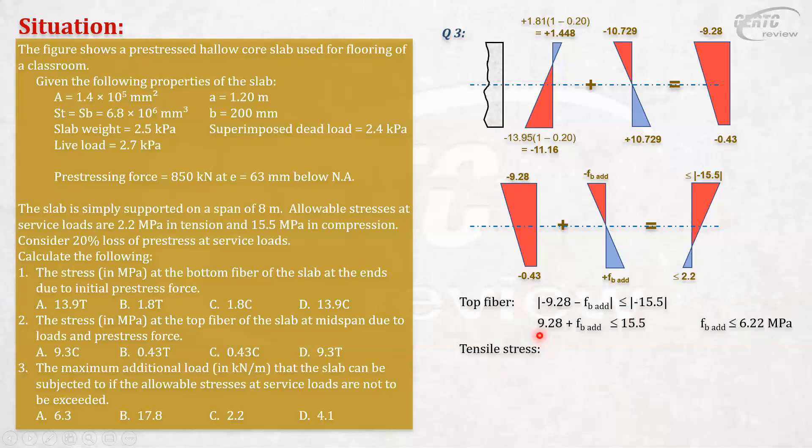Let's go to the bottom fiber. There's no problem here because this is all positive. The sum of these two, which is positive, must not exceed 2.2. Based on that, you will get fb_additional must not exceed 2.63. What this means is: to not exceed the allowable tensile stress of 2.2, the additional stress due to load must not exceed 2.63. For compression, to not exceed the allowable compressive stress of 15.5, your additional load must not exceed 6.22.